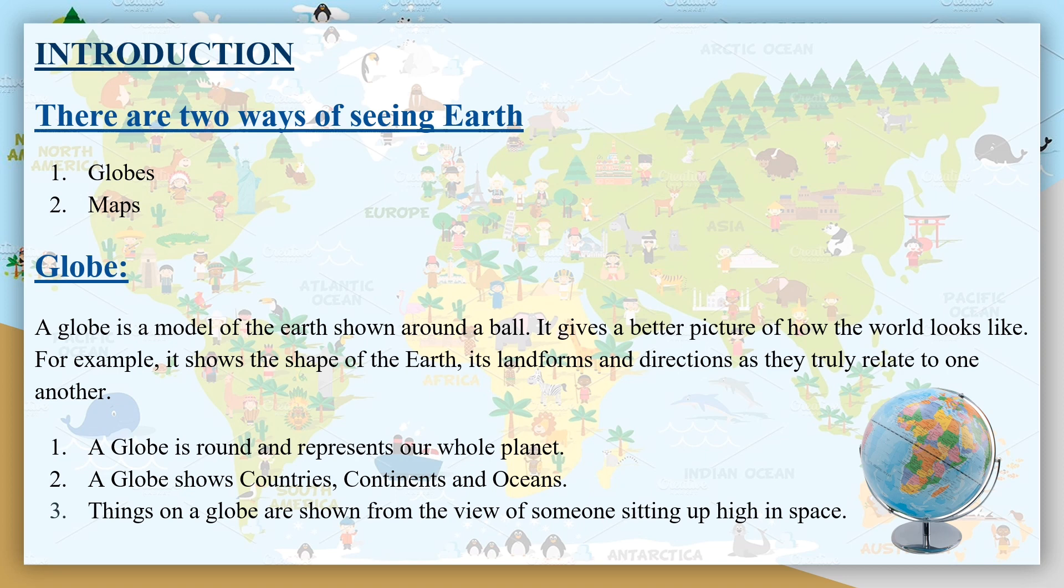Its landforms and directions as they truly relate to one another. A globe is round and represents our whole planet. A globe shows countries, continents and oceans.